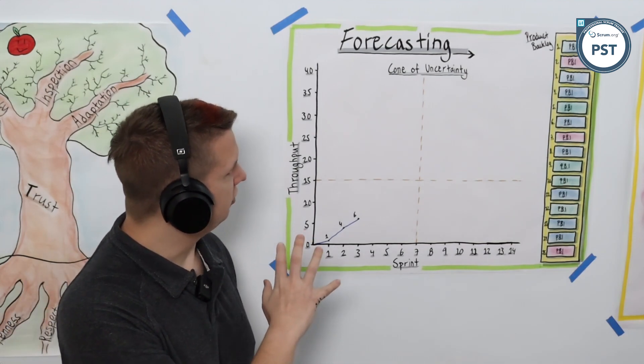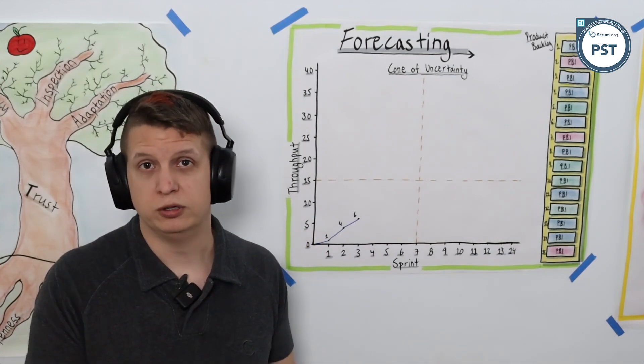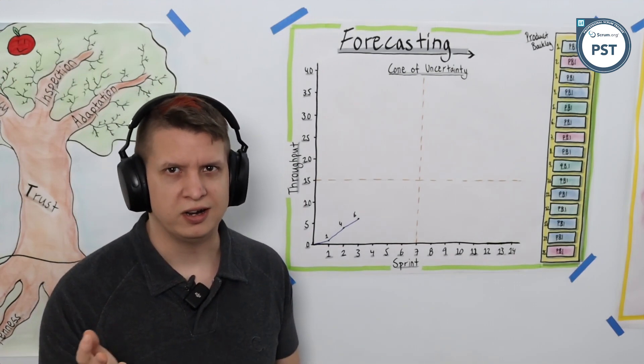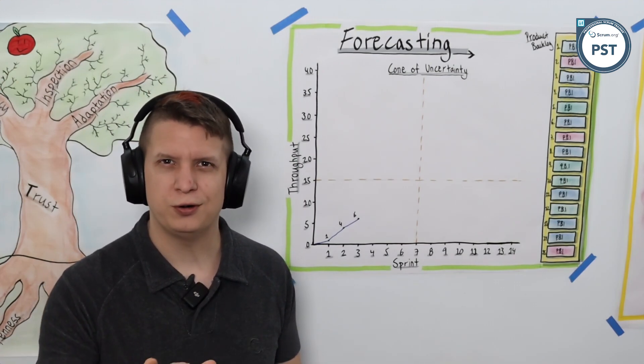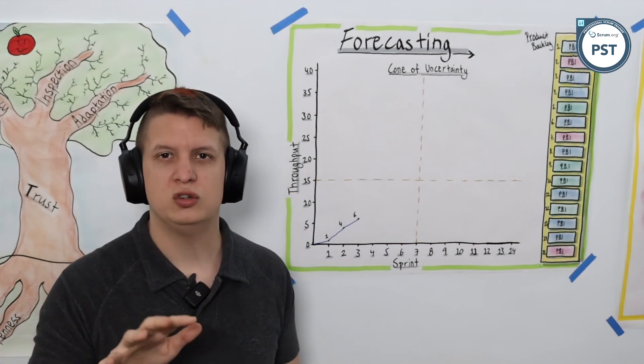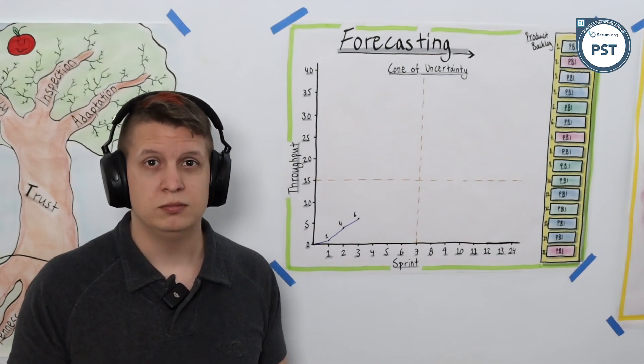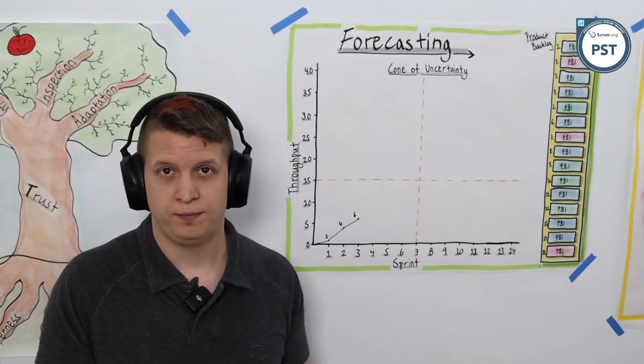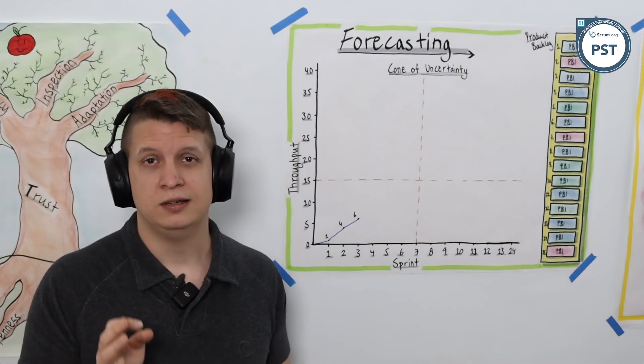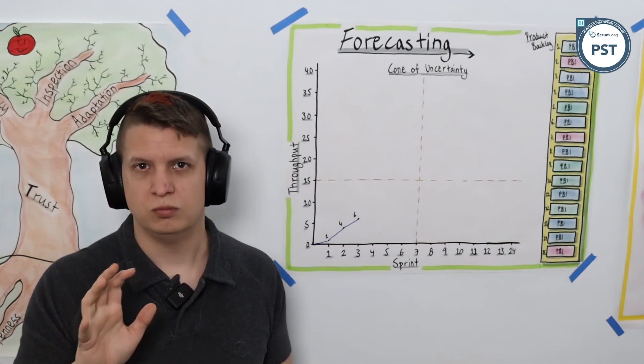For forecasting and the cone of uncertainty, my recommendation is to use throughput. You may have heard of or used velocity before, which is fine. Throughput is the same idea of how much work can get done in a period of time. Because we're talking about scrum, the period of time would be a sprint. So how many product backlog items can get done in a sprint - that number is your throughput.